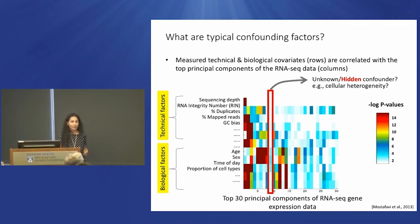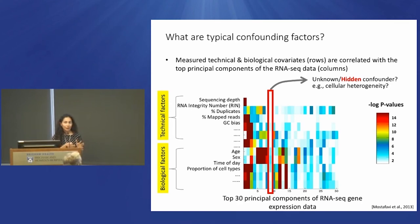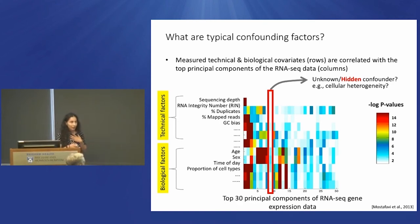A recent development in statistical genomics has been modeling hidden confounding factors. The idea is that we can never measure all possible confounding factors — some we didn't think of, and some we didn't measure accurately using questionnaire data. If we take gene expression data and do dimensionality reduction like principal component analysis, the principal components often correlate with technical factors or demographic information. Hidden confounding factor correction means attributing large-scale variability we can't explain with known factors to unmeasured confounding factors and adjusting for them in association analysis.